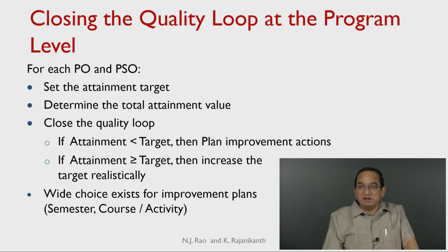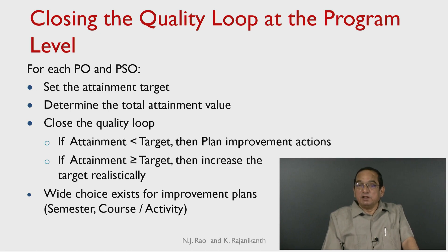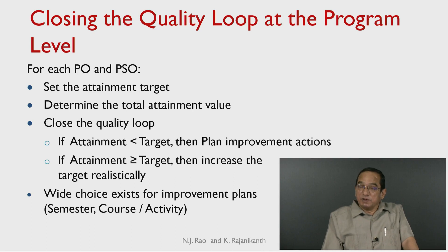Closing the quality loop at the program level is the final stage. For each PO and PSO, we set the attainment target, determine the total attainment value, and then close the quality loop. If attainment is less than target, plan improvement actions. If attainment is greater than or equal to target, increase the target realistically. Because we are considering improvement plans over the entire four-year program, there is wide choice regarding which semester, course, or activity the improvements are planned for. When looking at improvement plans for a specific course the choice is limited, but for a PO or PSO the choice is quite wide.